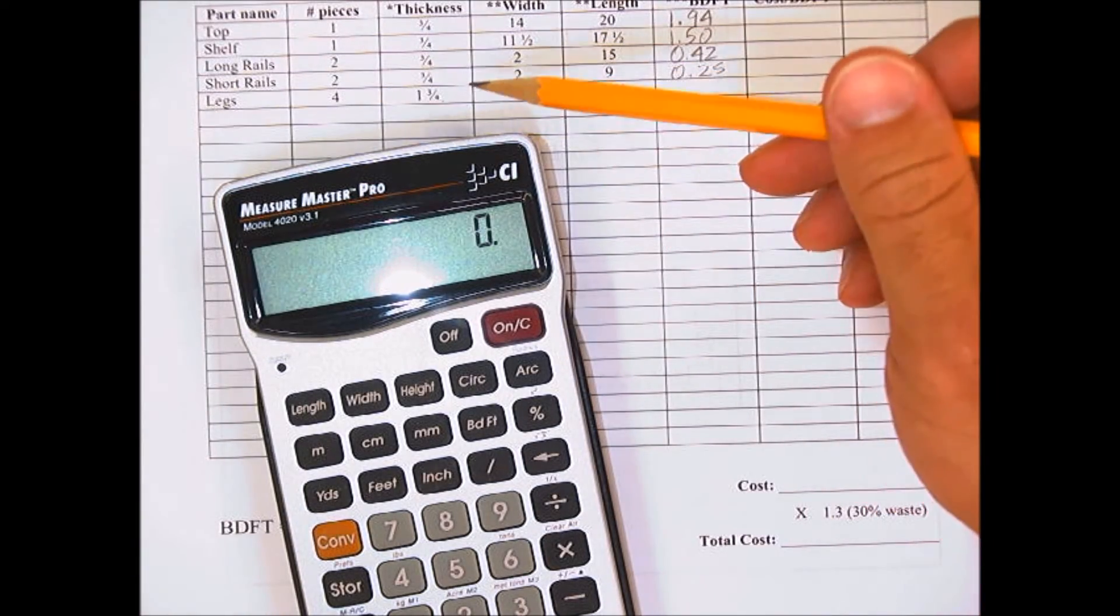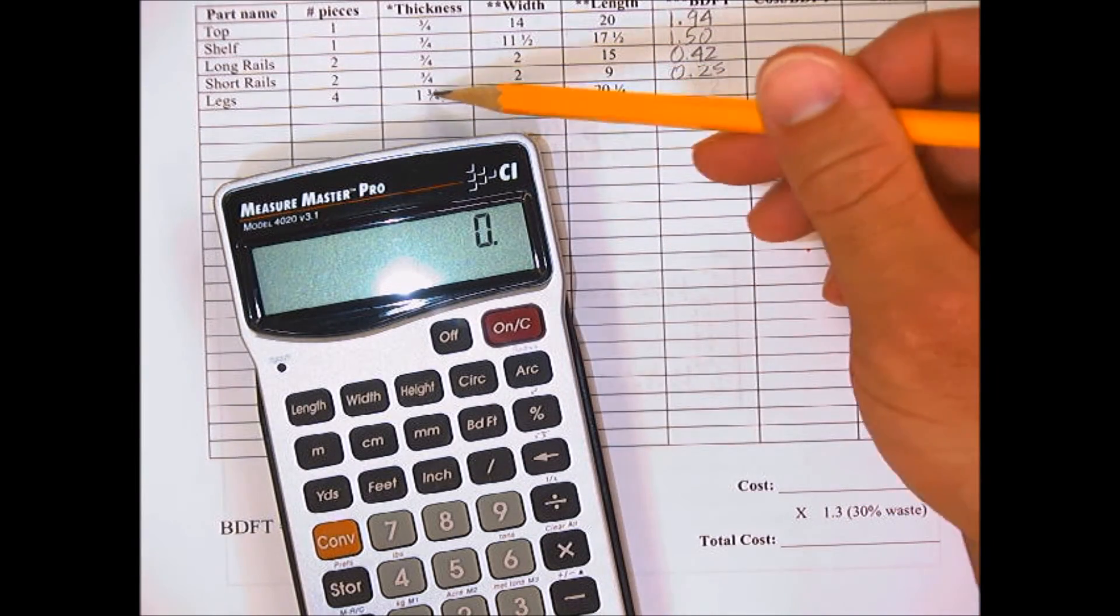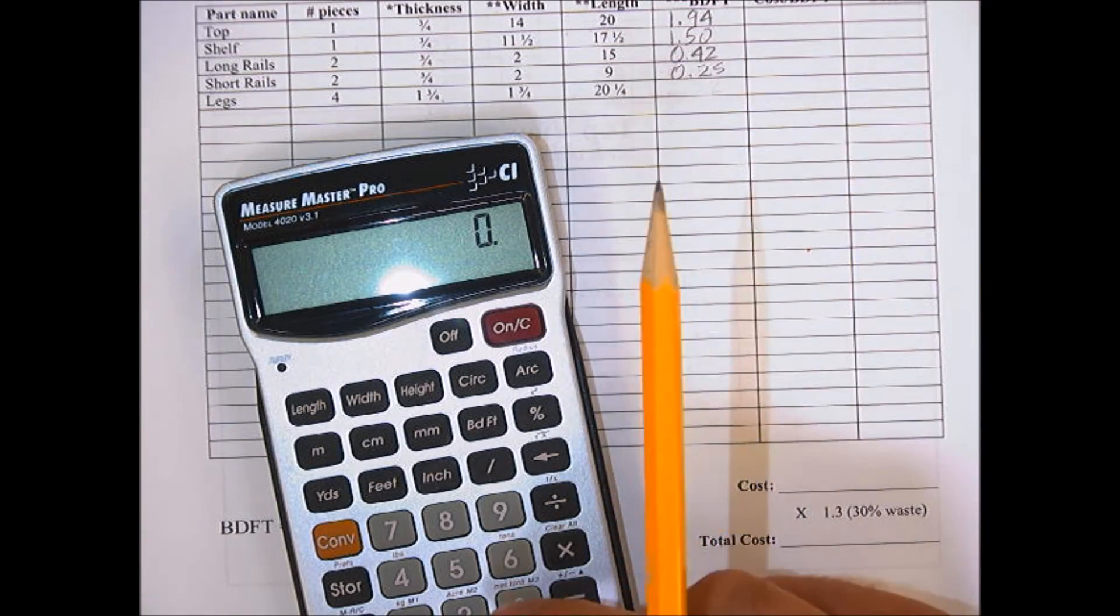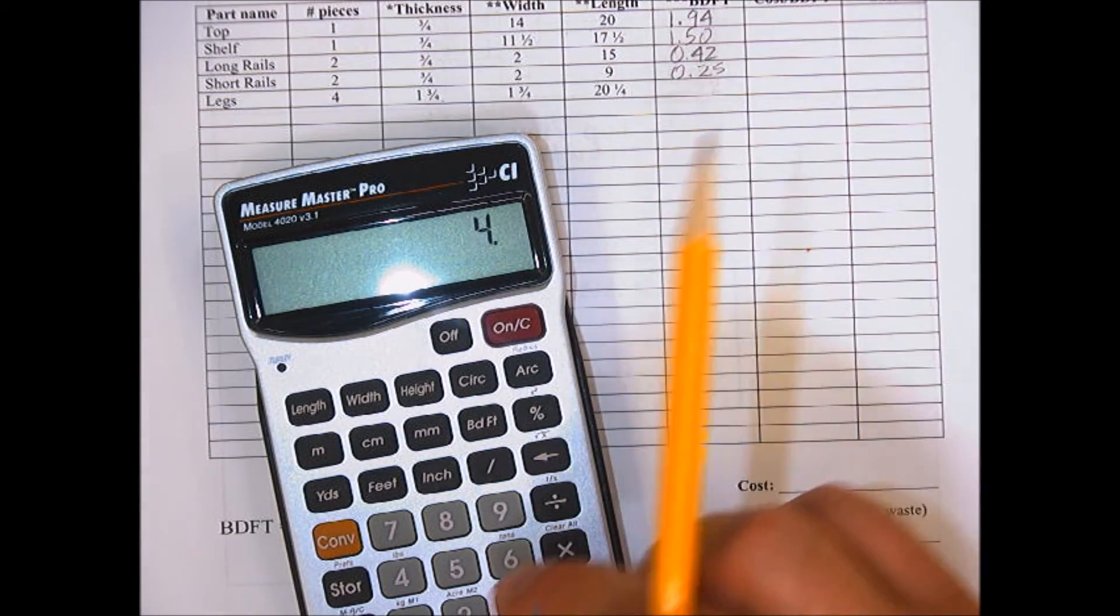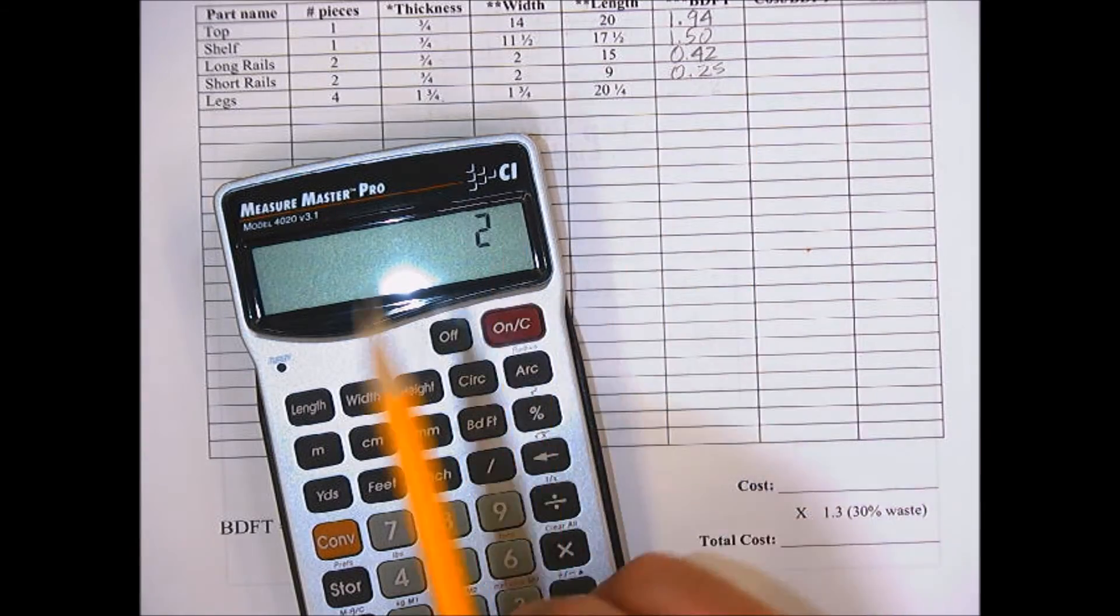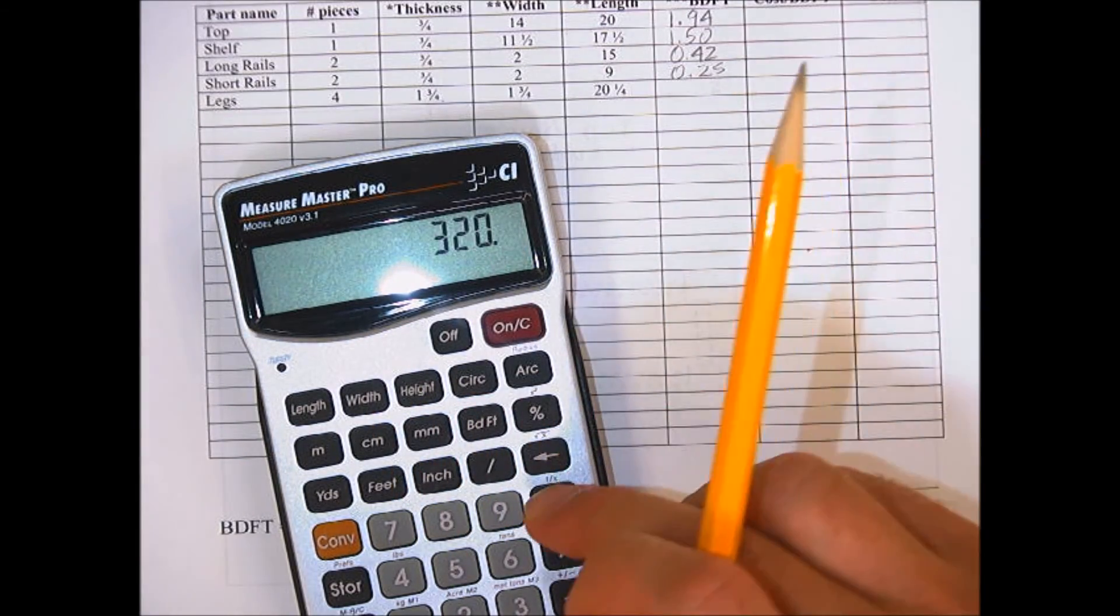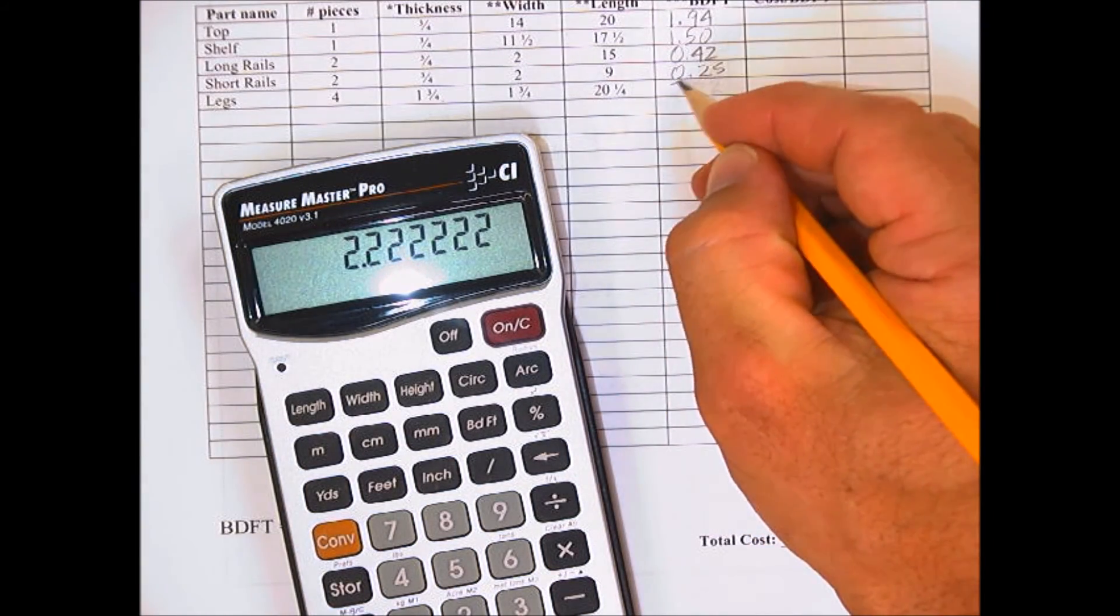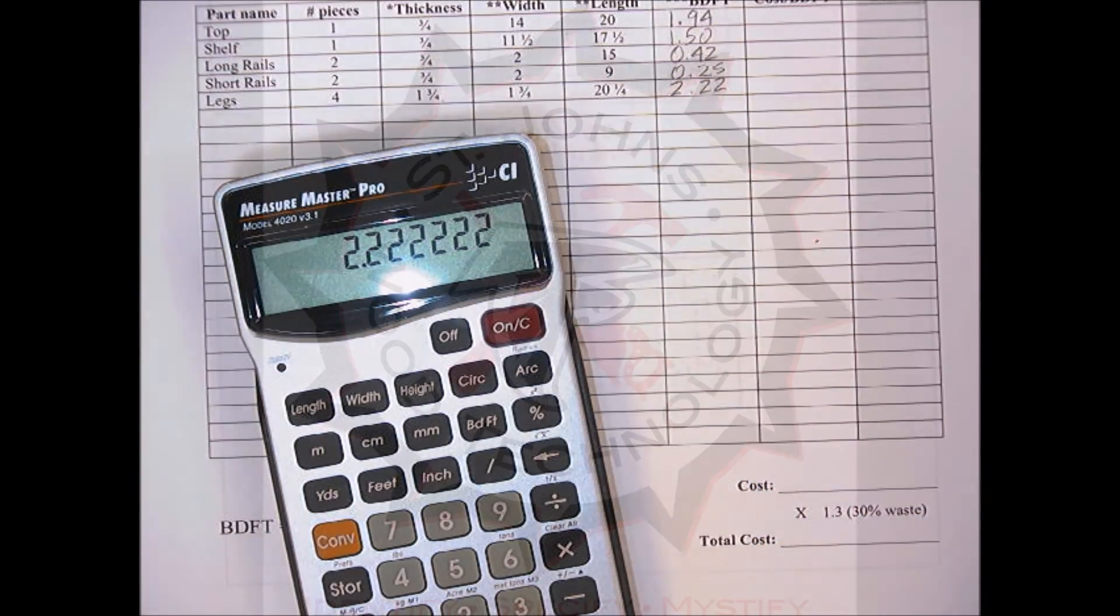Finally, there's four legs. Thickness and width—one and three quarters each—round to two. Twenty and a quarter rounds down to 20. So, 4 times 2 times 2 times 20 divided by 144 equals 2.22 repeating. We'll round down to 2.22.